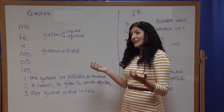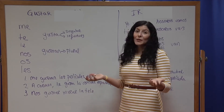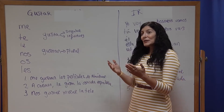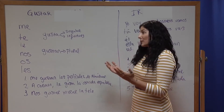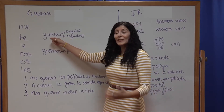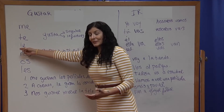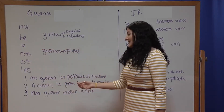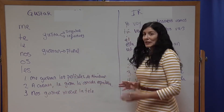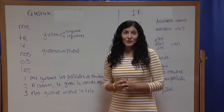So I would say: 'Me gustan las películas de Almodóvar.' If I wanted to talk about a singular object — for example, that Carmen really likes Spanish food — I would need to use the singular form of gustar and the pronoun associated with Carmen, which is le. So I would say: 'A Carmen le gusta la comida española.' And that's how I would say 'Carmen likes Spanish food.'